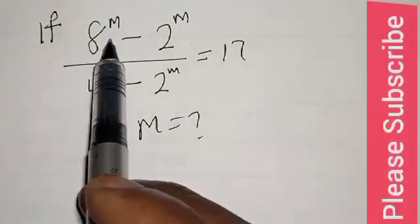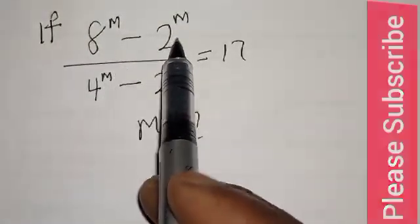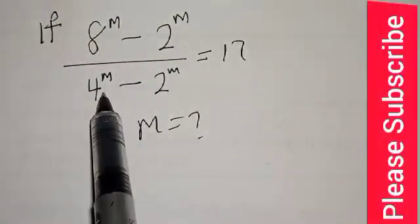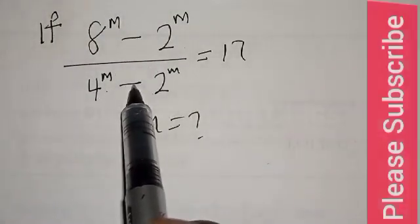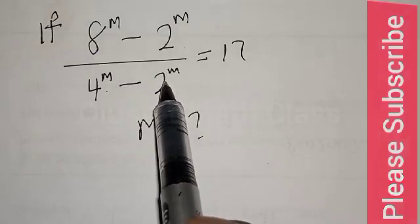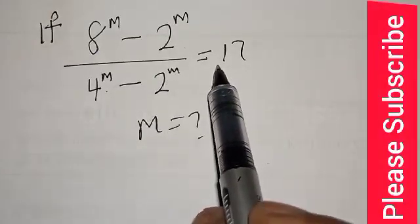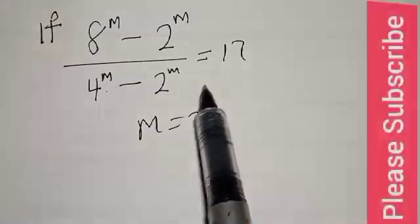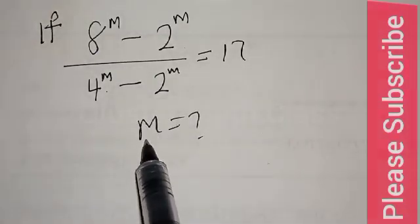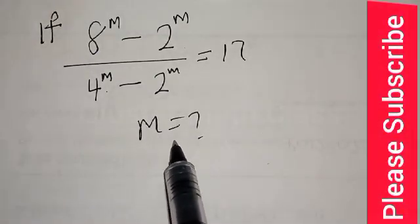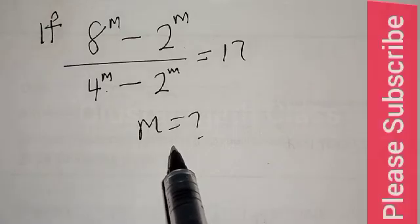If 8 raised to power m minus 2 raised to power m, over 4 raised to power m minus 2 raised to power m, is equal to 17, what is the value of m?